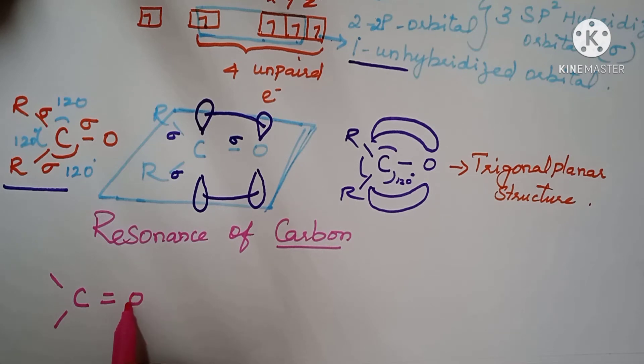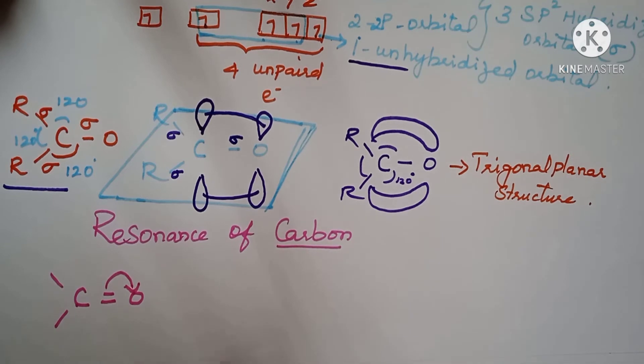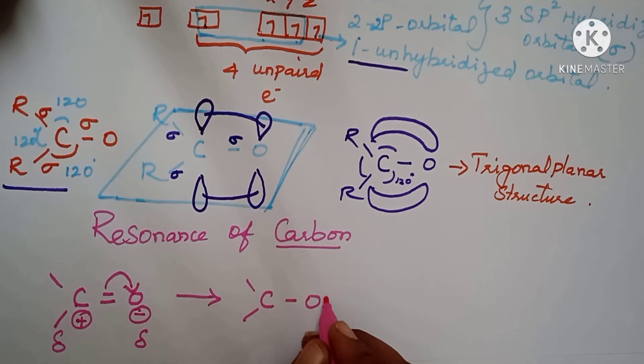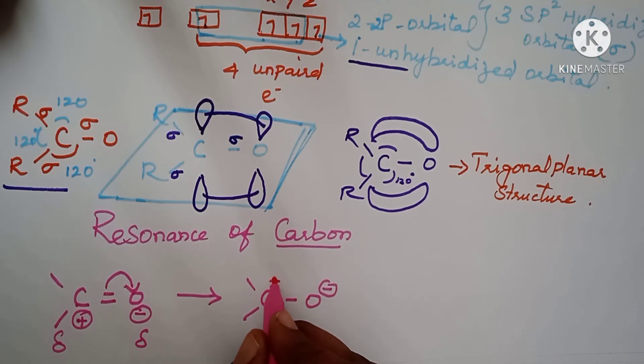Oxygen is having more electronegativity when we compare to carbon. So what happens? The electrons pull towards the oxygen. So automatically, it gets negative charge. Electron goes that side means naturally it will be negative charge. When it goes to that side, automatically, it gets positive charge. So delta positive, this is delta negative. So what happens here? It forms more electronegative and this is more electropositive.